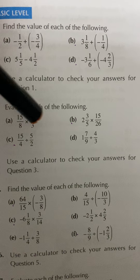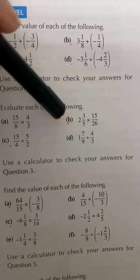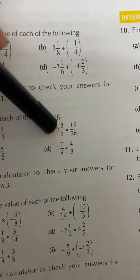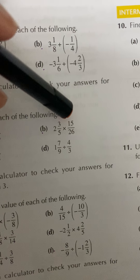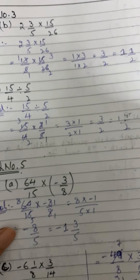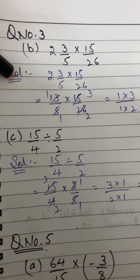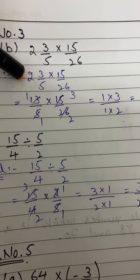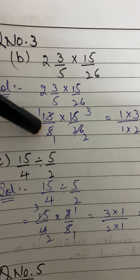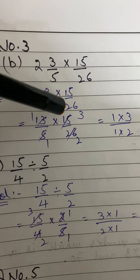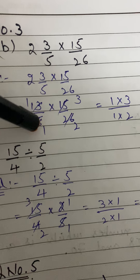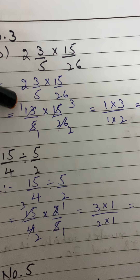Now Question 3: multiply and divide fractions — evaluate each of the following. I'll solve parts b and c; parts a and d are your homework. Part b: 2 whole 3 over 5 multiplied by 15 over 26. First convert the mixed number: 5 twos are 10, plus 3 is 13 — so 13 over 5, multiplied by 15 over 26.